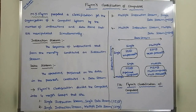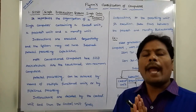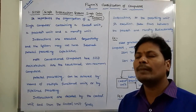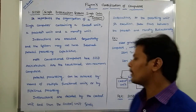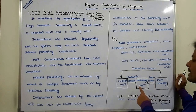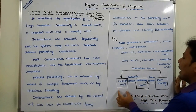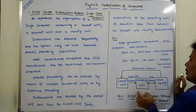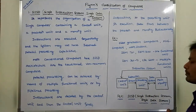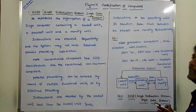Now we go to SISD computers, that means Single Instruction Stream and Single Data Stream. This diagram shows the SISD computer. It represents the organization of a single computer that consists of a single control unit, single processing unit, and main memory. In this SISD computer, instructions are executed sequentially, one after the other.